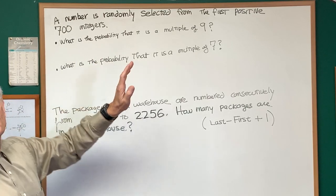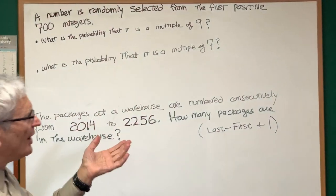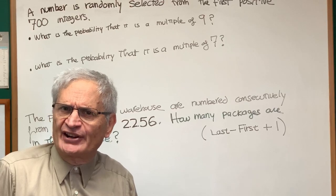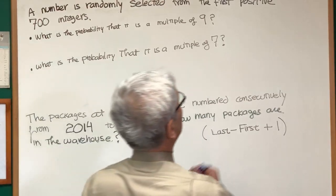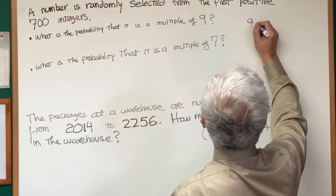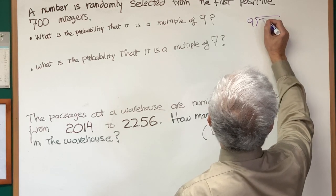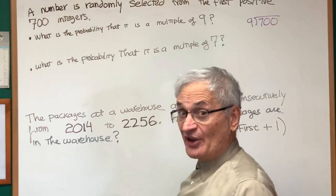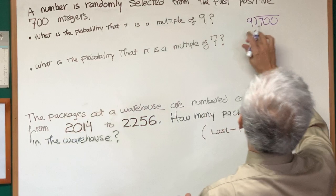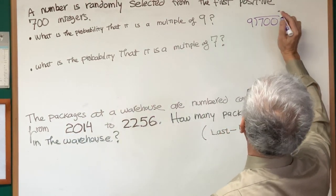What is the probability that it is a multiple of 9? Well, we ask how many multiples of 9 are there in the first 700 digits. Every ninth number is going to be a multiple of 9, it's going to be on the 9 times table. So let's see how many multiples of 9 there are by dividing 9 into 700.